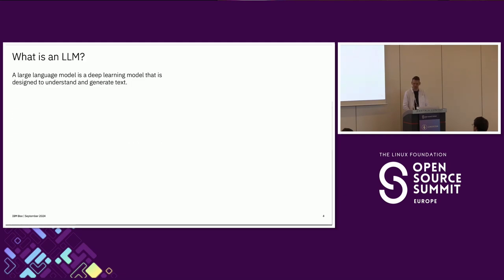Let's get started. What is an LLM? LLM is an abbreviation for Large Language Model. It's a deep neural network — a special type of such a network — because this model is typically designed to understand natural language, to generate such things, and to understand it.